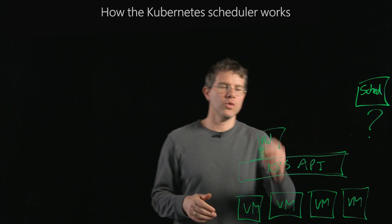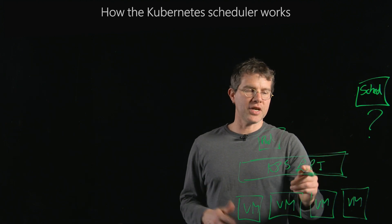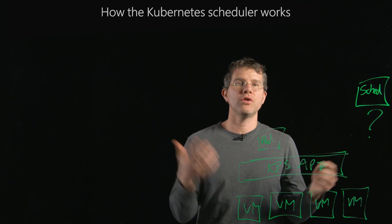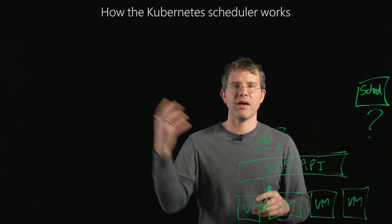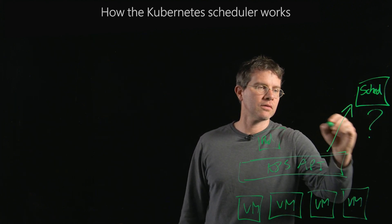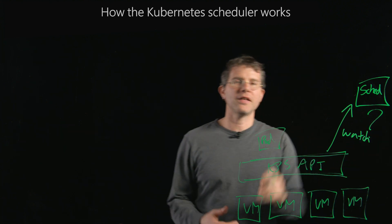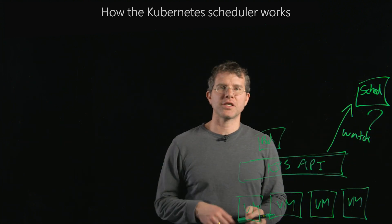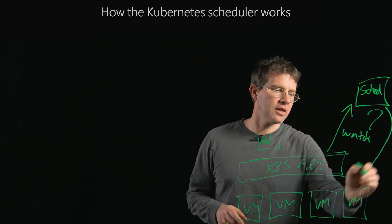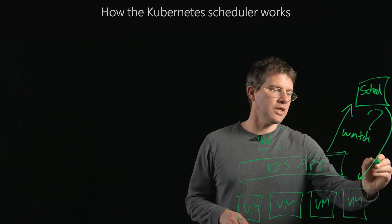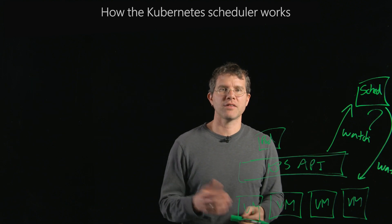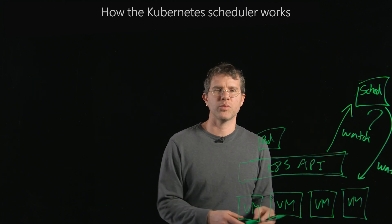Ultimately, when you create a pod, that object exists in the Kubernetes API, but it doesn't have a node associated with it. The API object for that pod doesn't have a machine that it's been scheduled onto. The scheduler is continually watching for pods that have been created but haven't been successfully scheduled. It is also continually watching the state of all of the machines, because where to schedule the container has a lot to do with the current existing state of a particular machine.